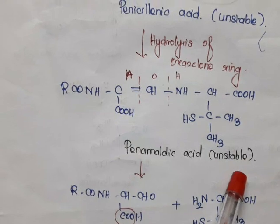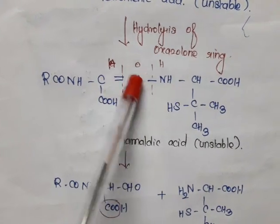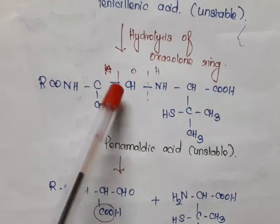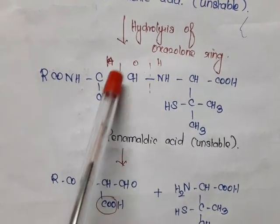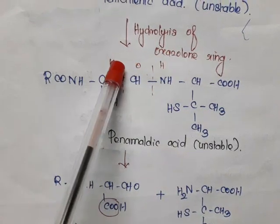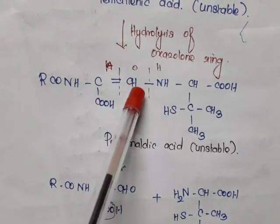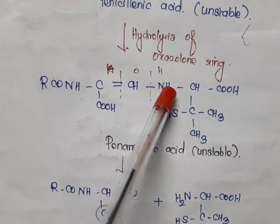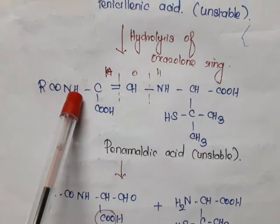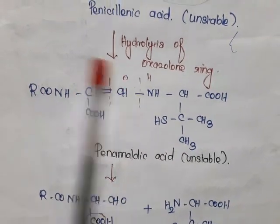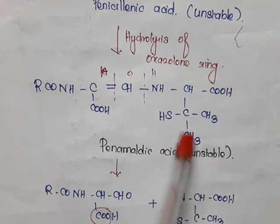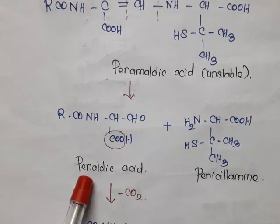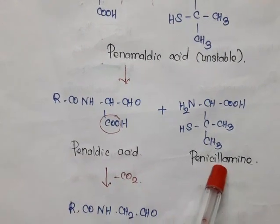Penamaldic acid is unstable, so on further hydrolysis the double bond is cleaved and converted to a single bond. H is added with the carbon, O is added with the CH, and H is added with the nitrogen. The products obtained are: RCONH-CHCOOH (penaldic acid) and NH2-CHCOOH-CHCOOH (penicillamine). On decarboxylation of penaldic acid, CO2 is removed and we get RCONH-CH2CHO, which is called penicilloaldehyde.